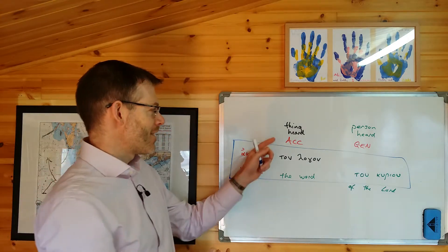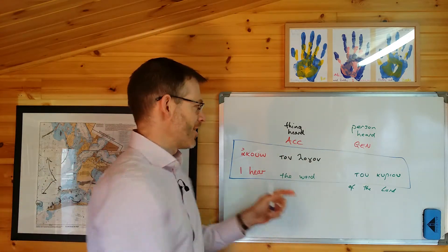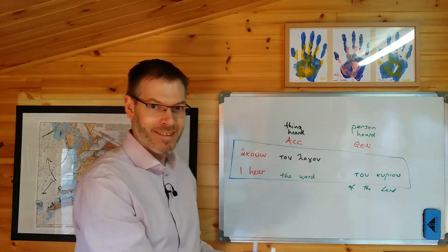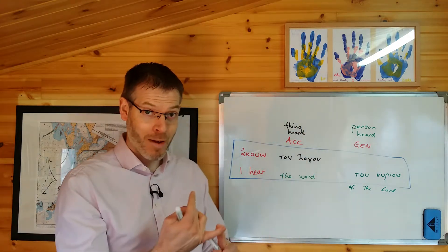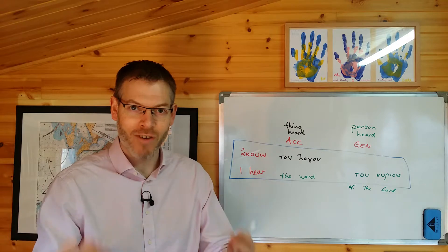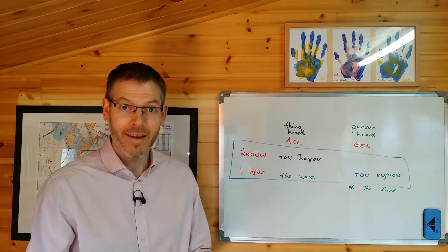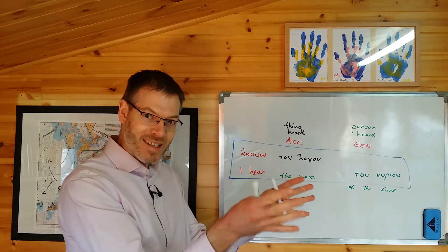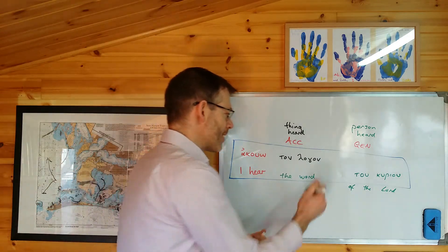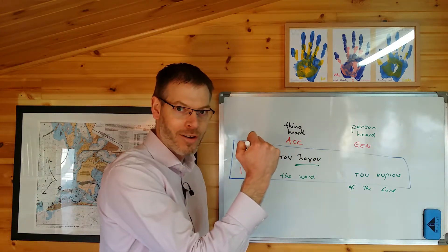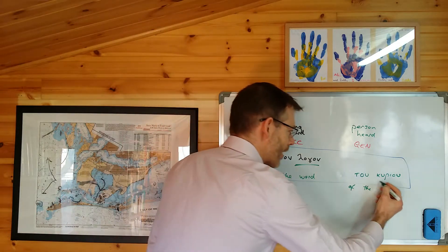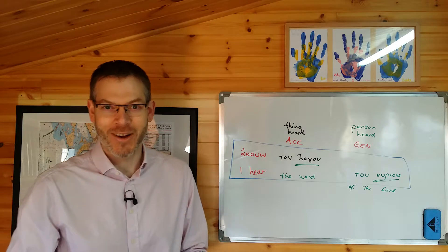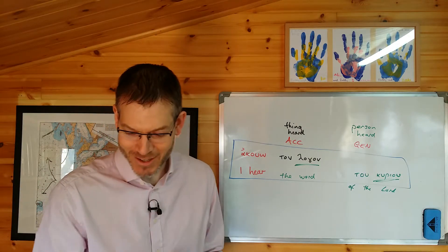That helps you first to remember it's accusative of thing heard and genitive of person heard — and not accusative of person, genitive of thing. It helps you to remember it. And secondly, it provides a kind of rationale which makes sense of why you'd want to do this, because then when you use them both, you can distinguish what is the thing that's being said — the logon, the word — and what is the person who's saying it. Hopefully that's helped you sort out a few of those bits and pieces in section 3.2.